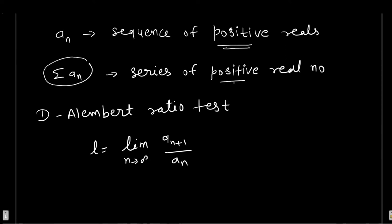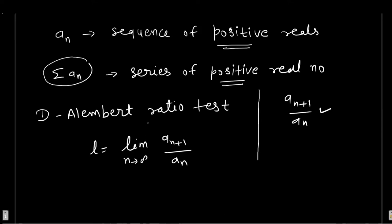Here we need to determine convergence. To determine this, we have a_(n+1) by a_n ratio. So the ratio is a_(n+1) by a_n, and we need to find the limit as n tends to infinity of a_(n+1) by a_n.